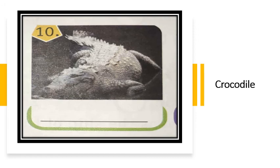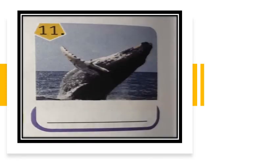Now we come to the last picture, and the last picture, that is number eleven, is of a Whale. W-H-A-L-E. Whale is the largest animal on earth. It lives in water and it is a very huge and big animal. Students, these are all the pictures given and we have identified all the animals and written their names below in the space provided.